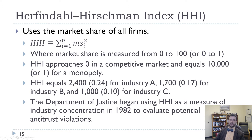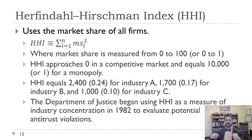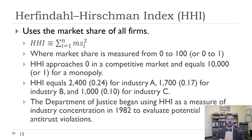The Herfindahl-Hirschman Index, or HHI, is one way to do that. It squares the market share of each firm and then adds them all up. For a monopoly, the market share is 100, so the HHI equals 100 squared, or 10,000 — the highest possible value. For perfect competition, each market share is really small, and squaring it makes it even smaller, so adding them up gives a value really close to zero. In our examples, the HHI equals 2,400 for industry A, 1,700 for industry B, and 1,000 for industry C.